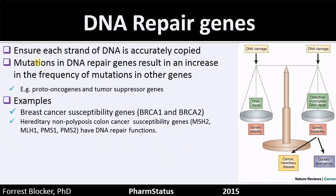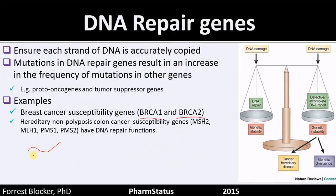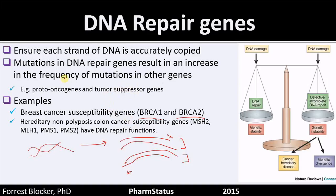DNA repair genes such as BRCA — you've heard a lot about this with Angelina Jolie. She had her breasts removed because she was carrying the BRCA gene. Whatever decision individuals come up with for how to deal with that, it's best to be informed about what your chances are and what it means to you. DNA repair genes ensure that each strand of the DNA is accurately copied. DNA is double-stranded, so when it's replicated we have two strands, and both strands through two different mechanisms are going to get copied. Mutations in DNA repair genes result in an increase in the frequency of mutations for other genes. Stay tuned for part four. Thank you for listening.